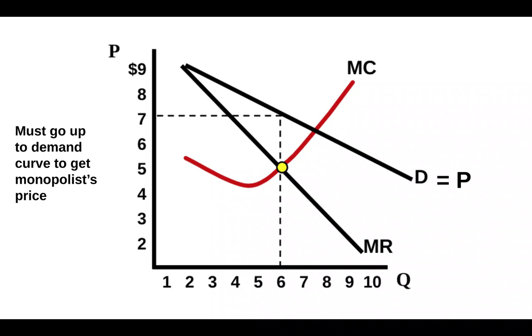So the monopolist actually charges a higher price than perfect competition. That's very important. Go up to the demand curve to get your price.